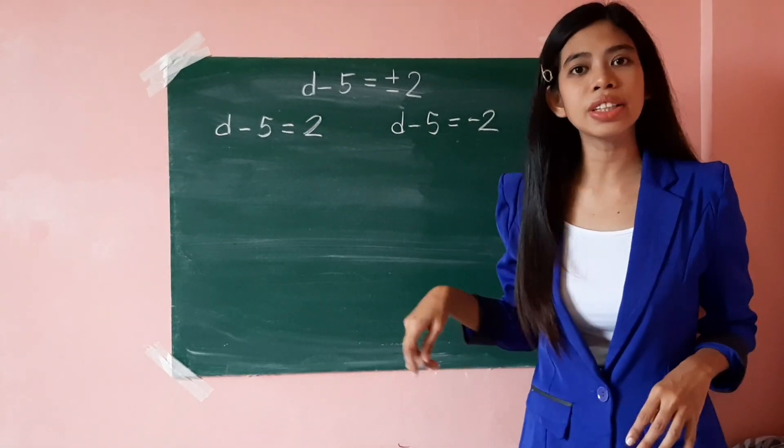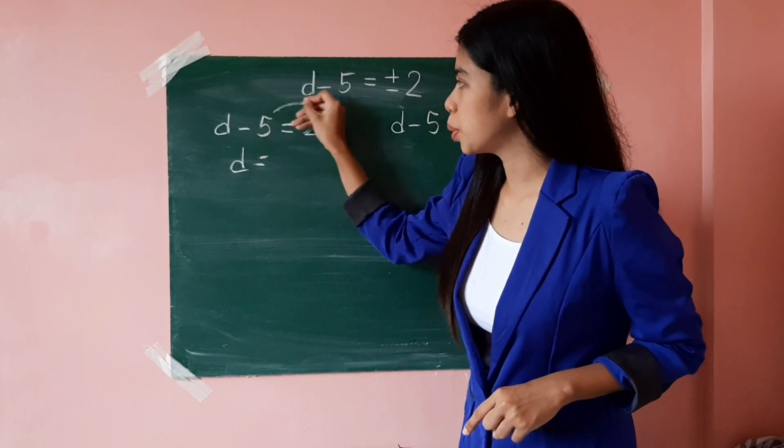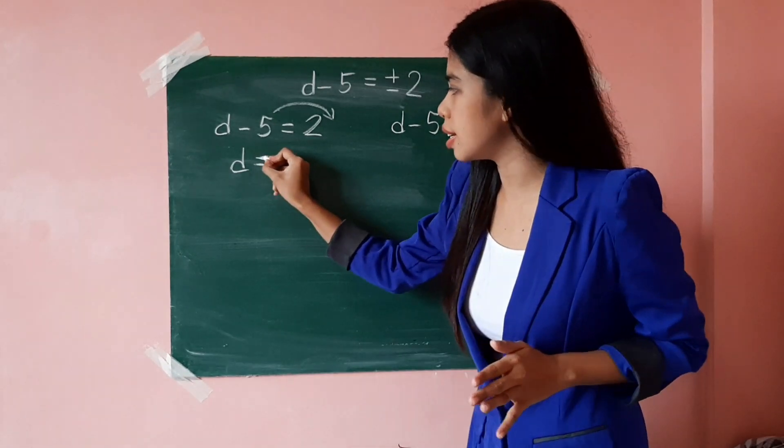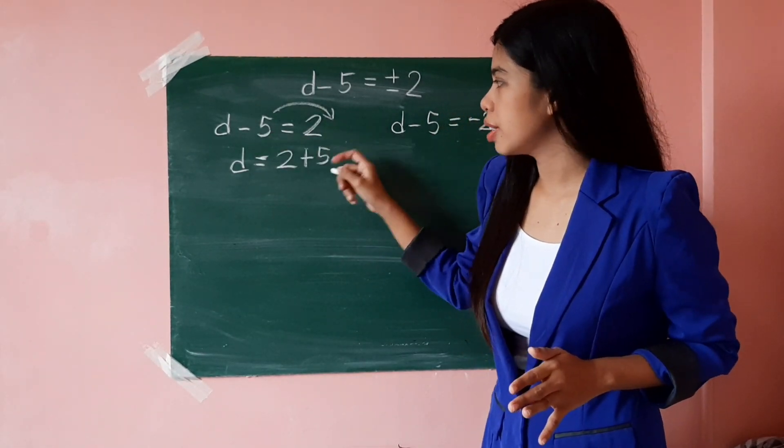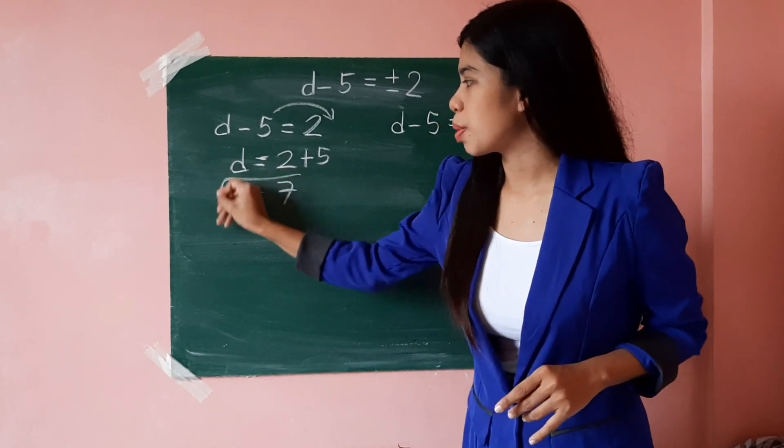Let us solve for the first value. All we need to do is to transpose the constant term to the other side and combine it with another constant term. So, that's d equals 2 plus 5. So, the first value of d is positive 7.